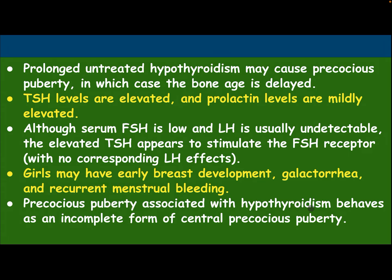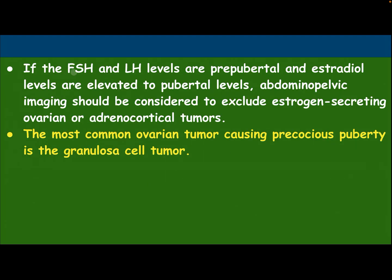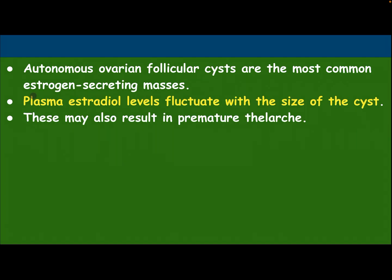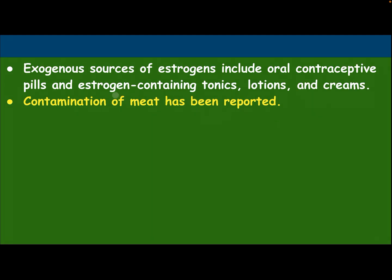Precocious puberty associated with hypothyroidism behaves as an incomplete form of central precocious puberty. If FSH and LH levels are prepubertal and estradiol levels are elevated to pubertal level, abdominopelvic imaging should be considered to exclude estrogen-secreting ovarian or adrenocortical tumors. The most common ovarian tumor causing precocious puberty is granulosa cell tumor. Autonomous ovarian follicular cysts are the most common estrogen-secreting masses, and plasma estradiol levels fluctuate with the size of the cysts. Exogenous sources of estrogen include oral contraceptive pills and estrogen-containing tonics, lotions, and creams. Contamination of meats has also been reported.